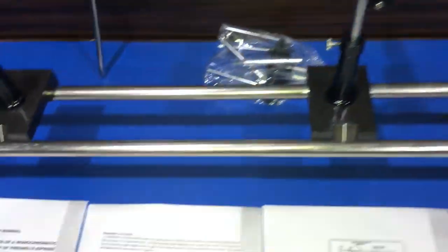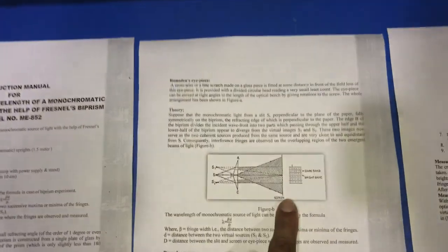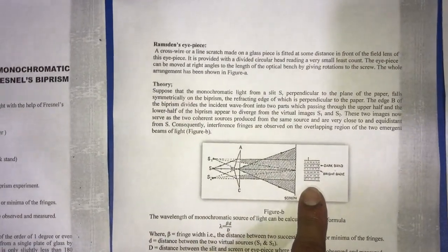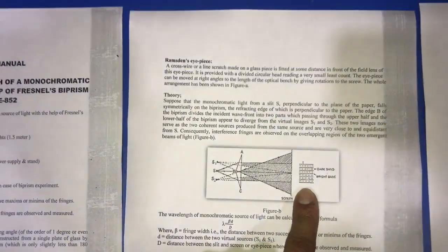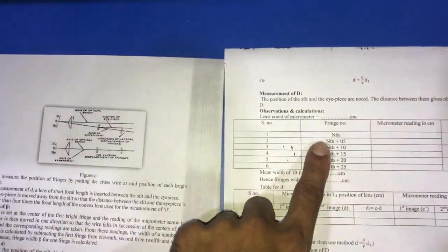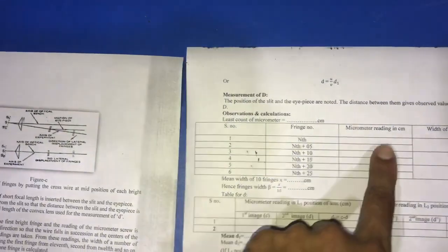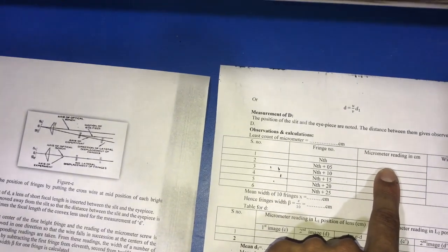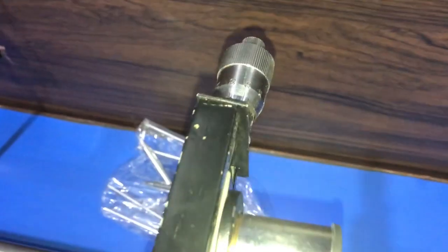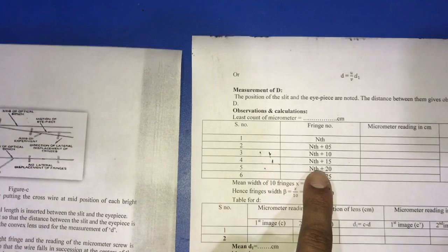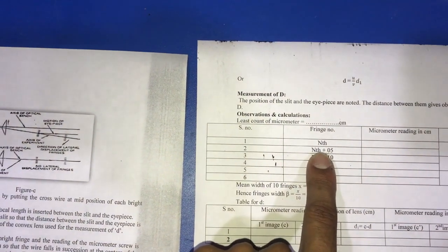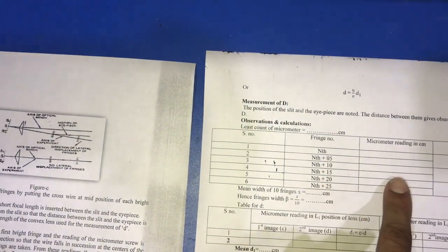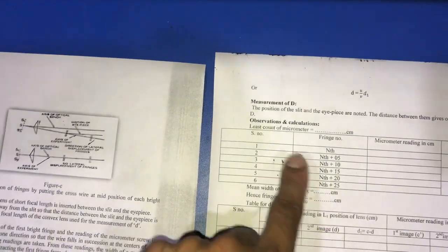Now we set the crosswire on one of the bright fringes and take it as a reference fringe, and note down the reading of the micrometer. After that we shift the crosswire on n plus 5 fringe and note the reading of micrometer.